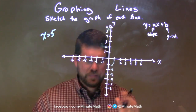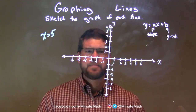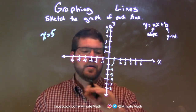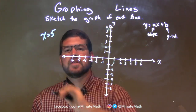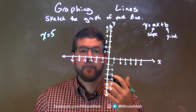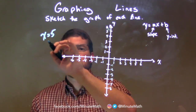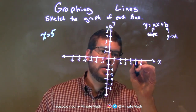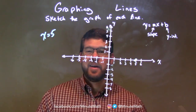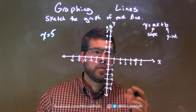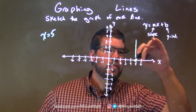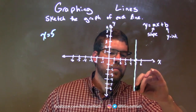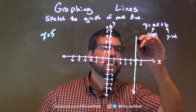x equals 5. This one's a little tricky. We've seen before when y equals something, we have a horizontal line. When x equals a number, we have a vertical line. So when x equals 5, the only thing we look at is where on the x-axis it equals 5 — right here at 5. We put a dot, and then we just have a vertical line from there.